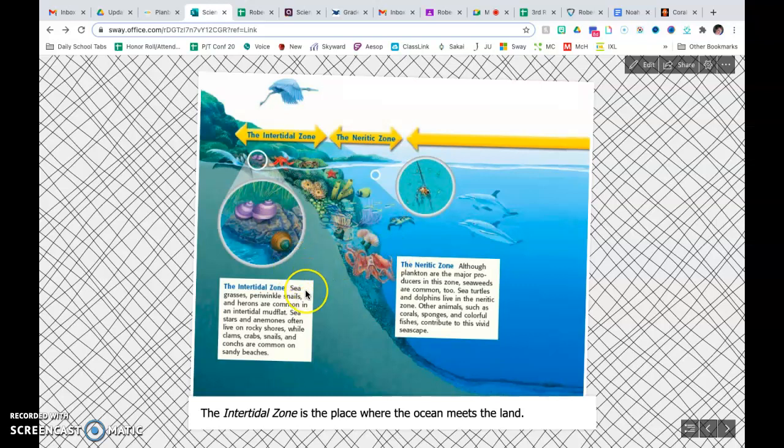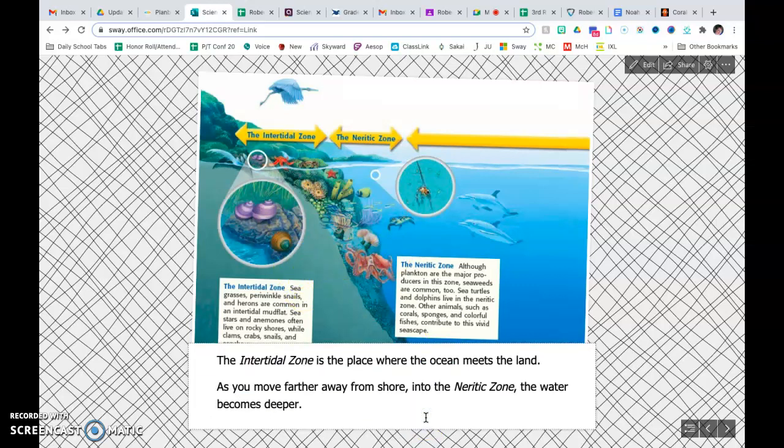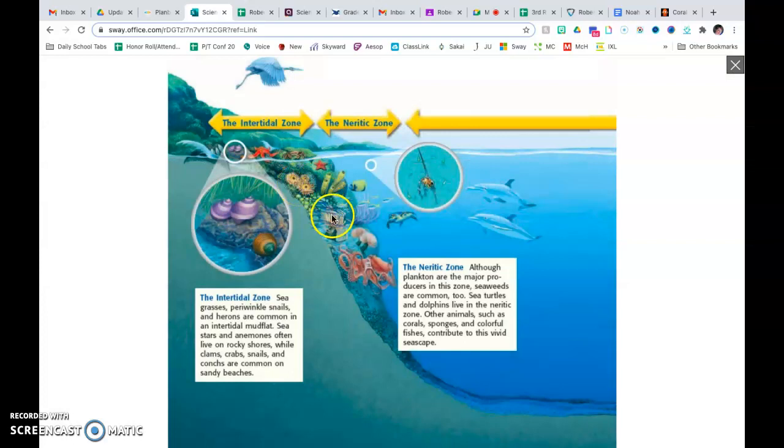The intertidal zone. This is the place where ocean meets land. So the tide comes in, ocean meets land. As you move further away from the shore into the neretic zone, the water becomes deeper, and you can see this in this image as it drops off. In the intertidal zone where it meets the shore, you have seagrasses, periwinkle snails, and herons, which is this bird, that are common.